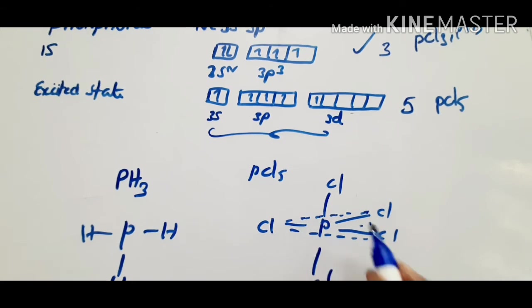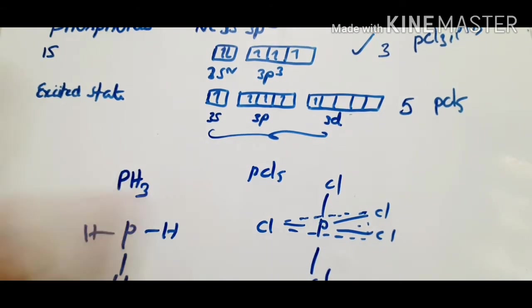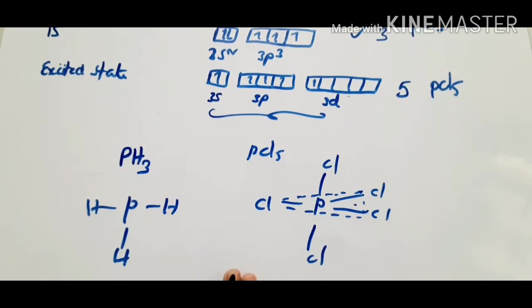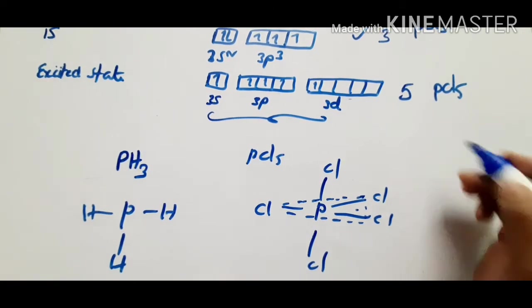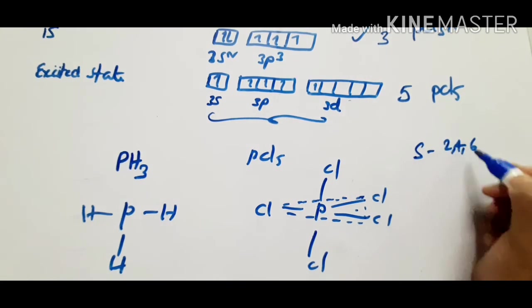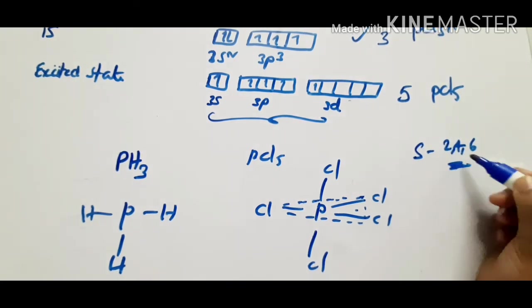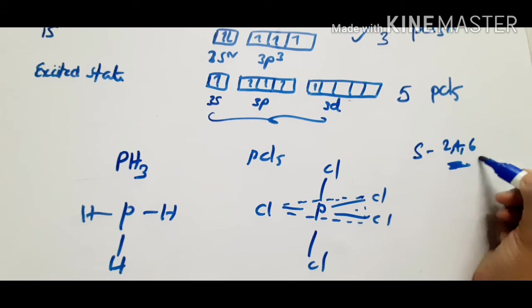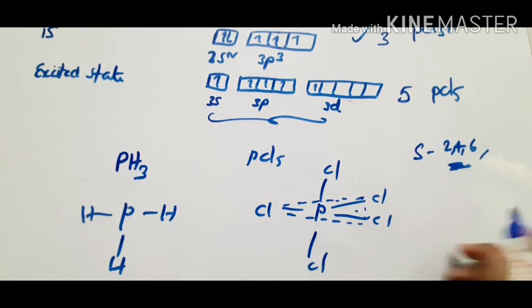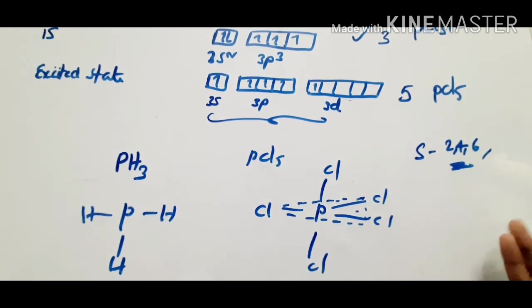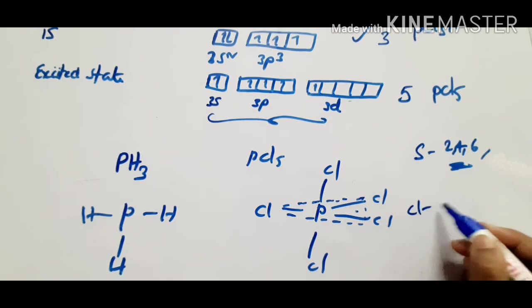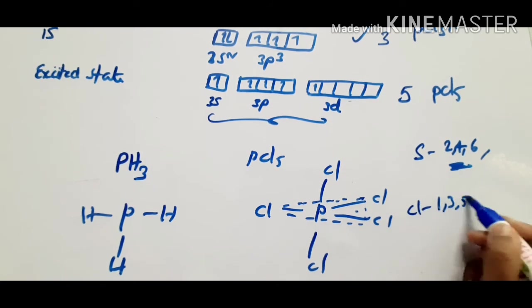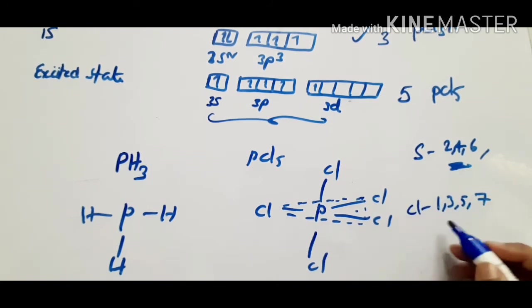Covalency or variable valency is the number of single electrons. Suppose sulfur — sulfur can exhibit covalencies of 2, 4, and 6, corresponding to its ground state, first excited state, and second excited state. Chlorine can exhibit covalencies of 1, 3, 5, and 7.